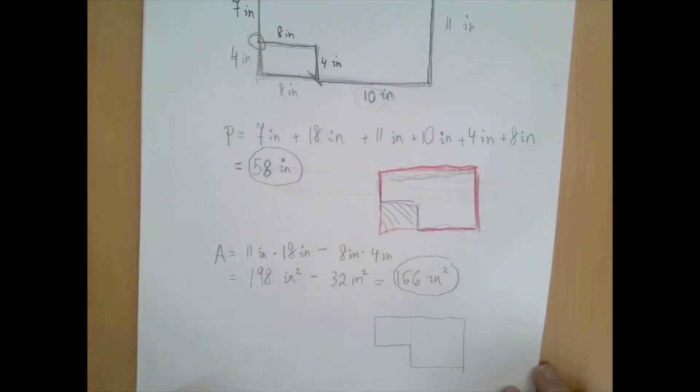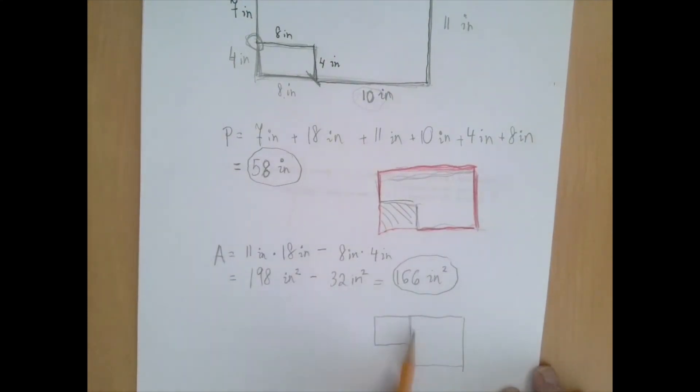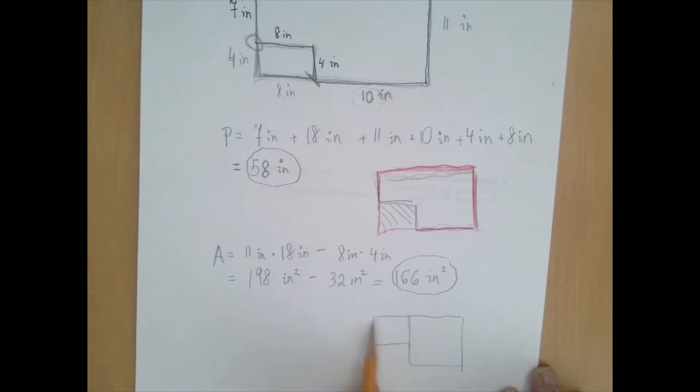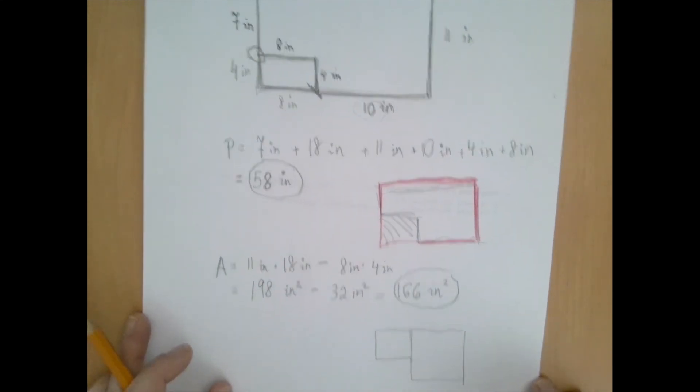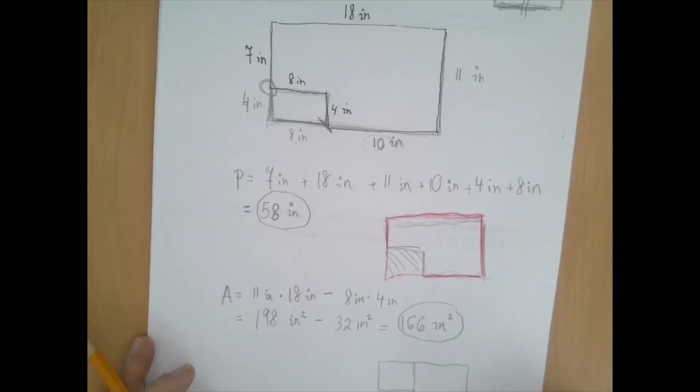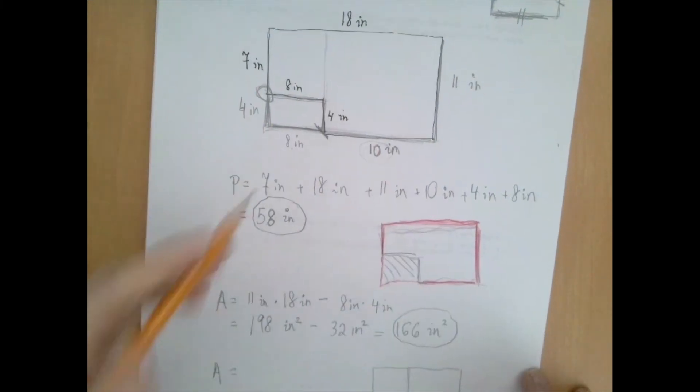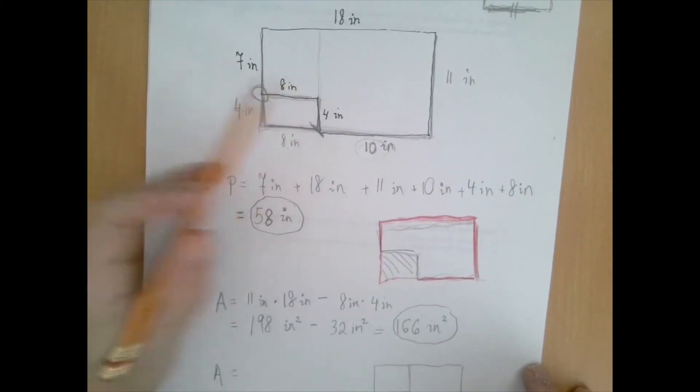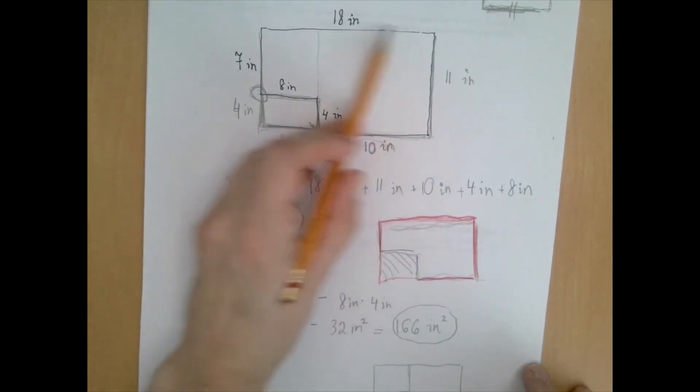The second approach for the area is, instead of subtracting rectangles, we can just add. So we can cut this shape into two rectangles along this line. We can also use this line. So if we go back to the original picture. To find the area, we could add this rectangle. That's a 7 by 8. And this rectangle, which is 10 by 11.